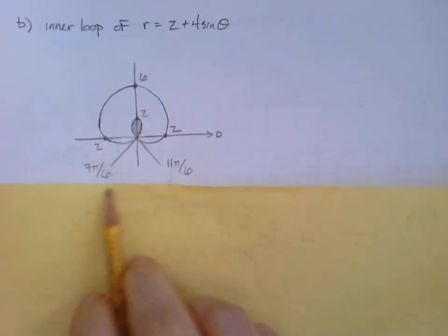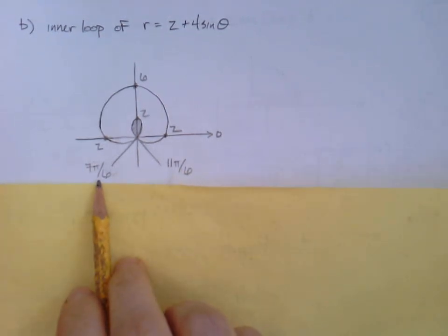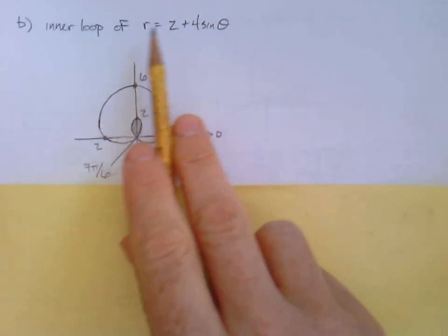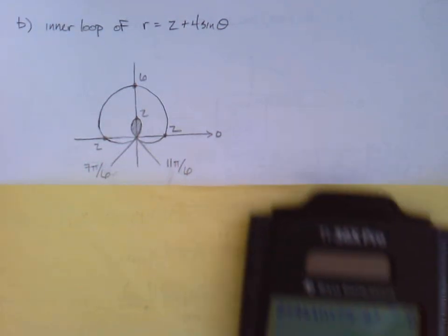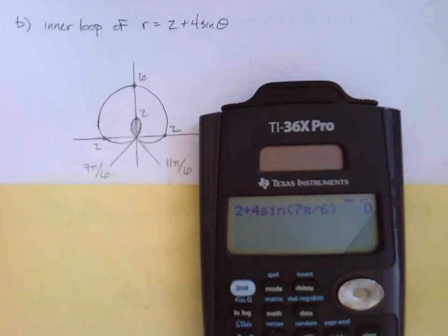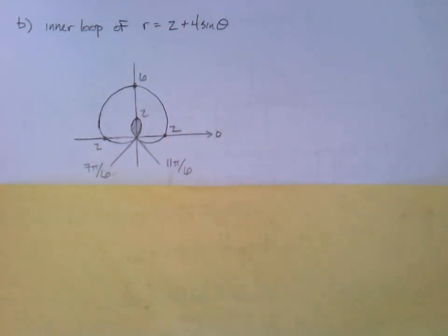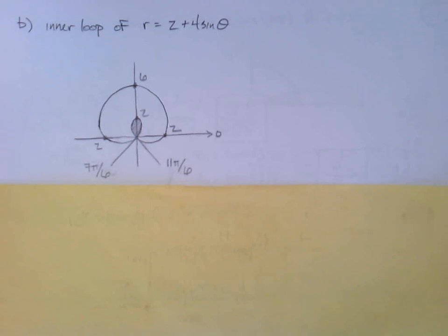Okay. Always confirm these, to be sure, because sometimes things can be deceiving. If I plug 7 pi over 6 back in, do I really get a radius of 0? I'm just going to grab my calculator. Here, 2 plus 4 sine 7 pi over 6, and yep, that would give me a radius of 0. And, well, I'm feeling pretty confident now, but let me just plug in 11 pi over 6. And, yeah, that's giving me 0 as well. So those are the two moments where my radius is 0. That's my starting and ending.